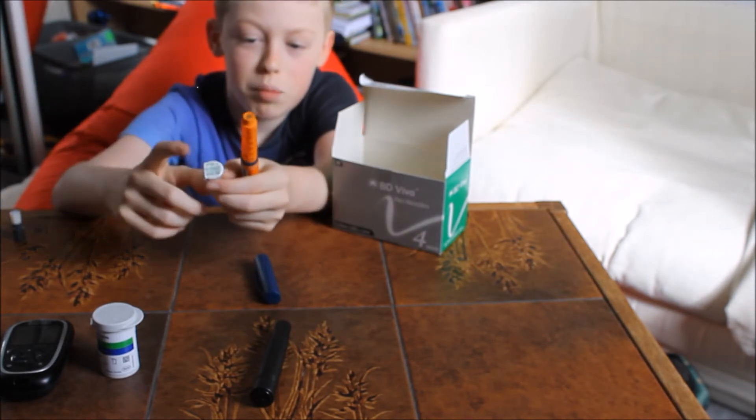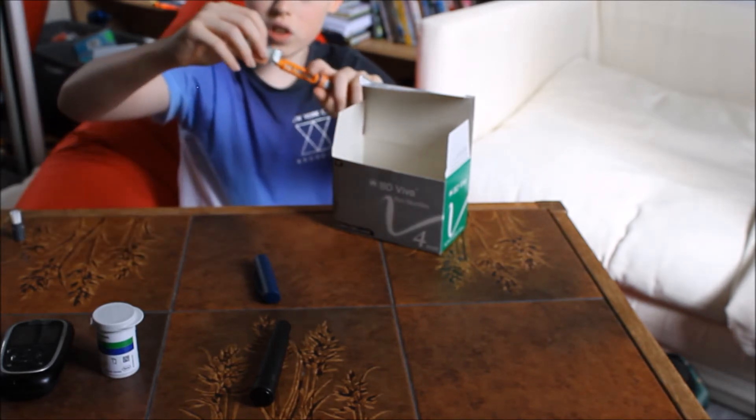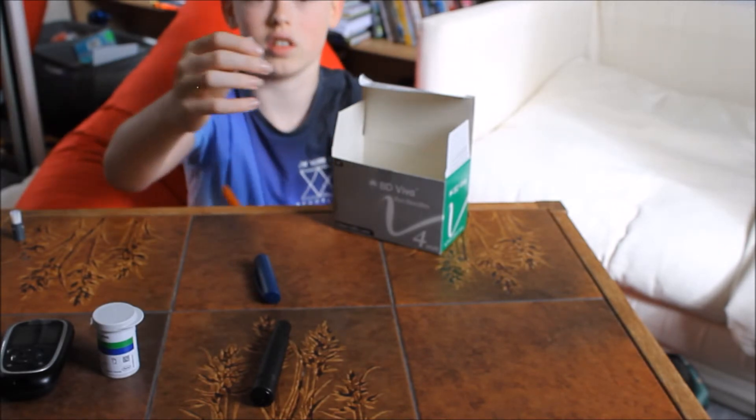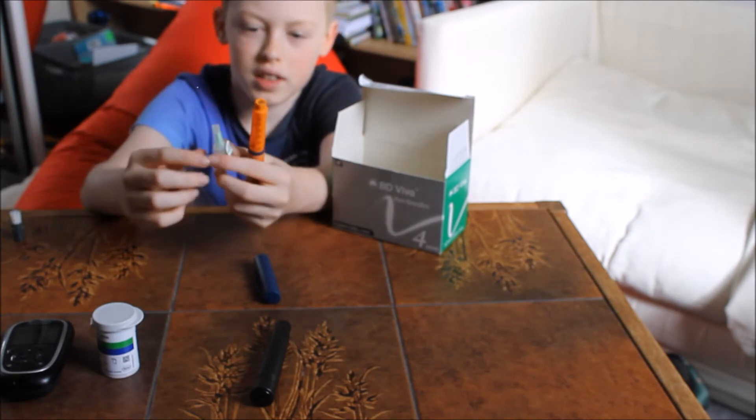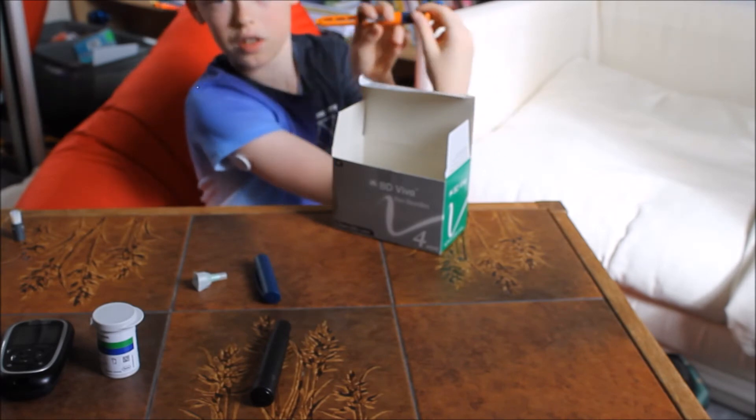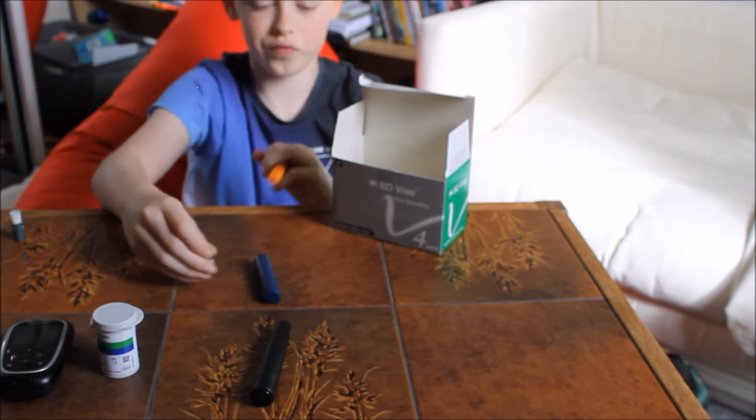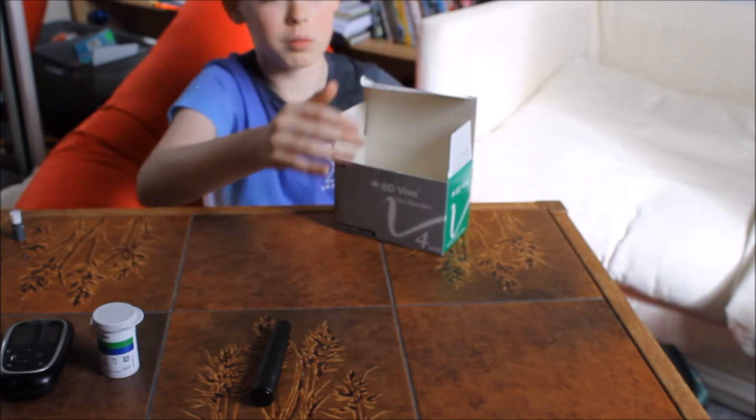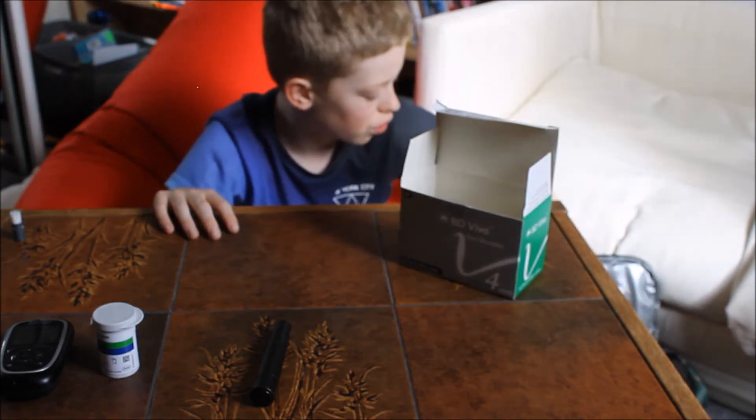I'm not going to do it right now, but you would usually take this bit off the top, screw it onto here, take this bit of plastic off, and then take that green bit off. Then you would be able to twist it up to however many insulin units you need and inject. I'm not going to do that right now.